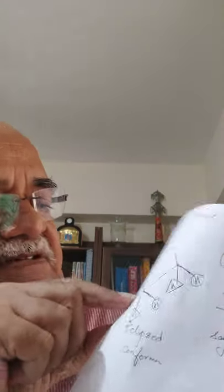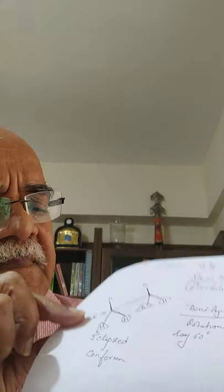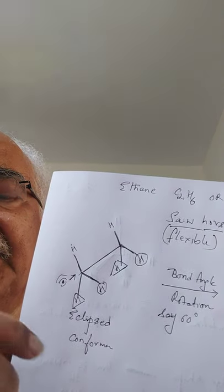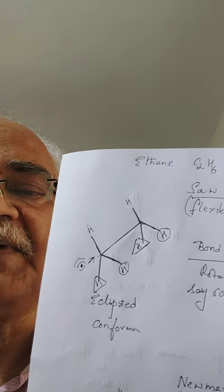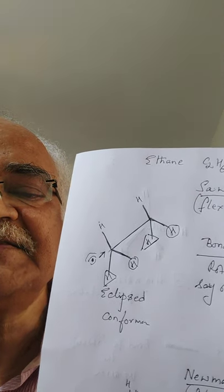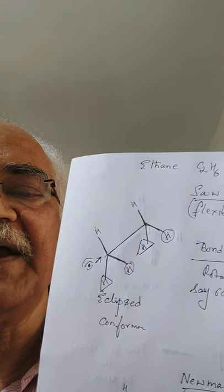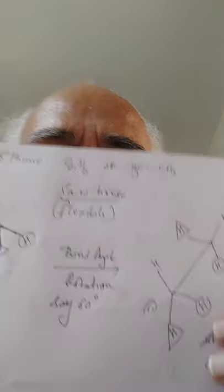Here is the saw horse formula on paper. I am viewing the molecule from a slant angle — that arrow mark shows the viewer's direction. Focusing on the top hydrogen, they are one behind the other, as are the other hydrogens. For clarity, some hydrogens are marked with a triangle, some with a circle, some without any boundary. In this eclipsed form, hydrogens enclosed in a triangle are one behind the other, those in a circle are also one behind the other. This is called the eclipsed conformer of ethane.